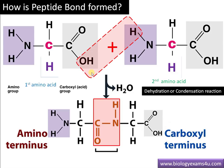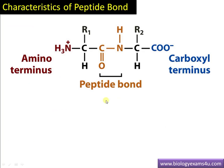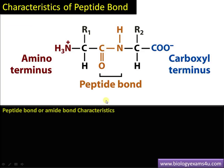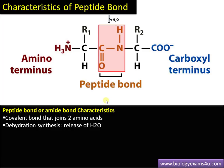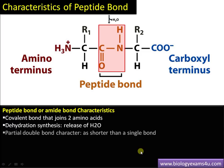A peptide bond is a bond formed between two amino acids — specifically between the carboxyl group of the first amino acid and the amino group of the second amino acid — with the release of a water molecule. The peptide bond is also called an amide bond. It is a covalent bond that connects two amino acids, formed by dehydration synthesis with elimination of a water molecule.